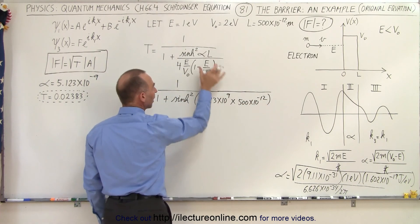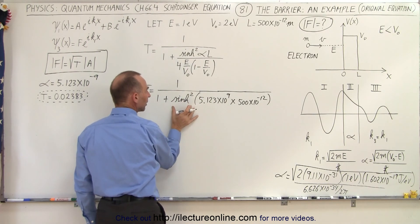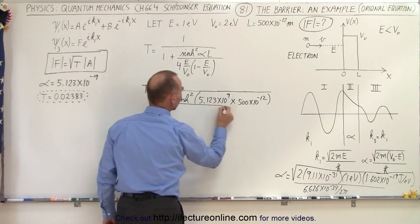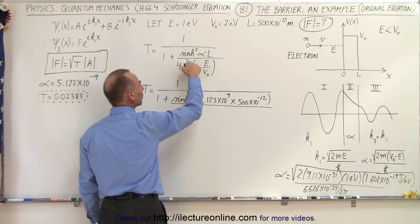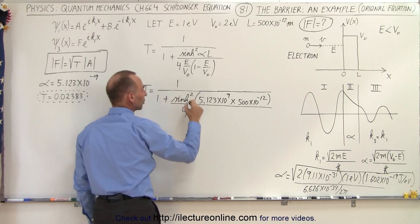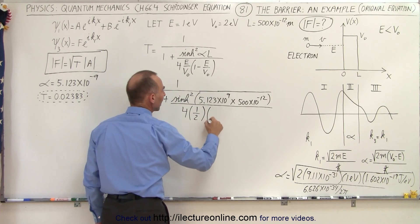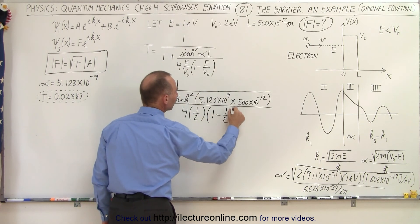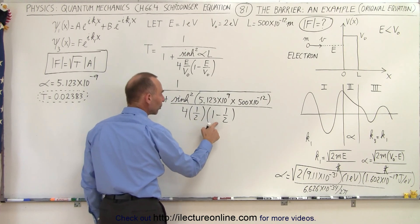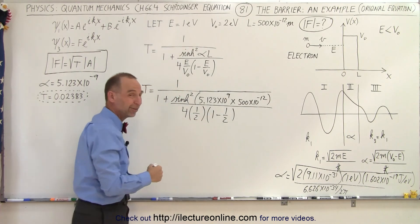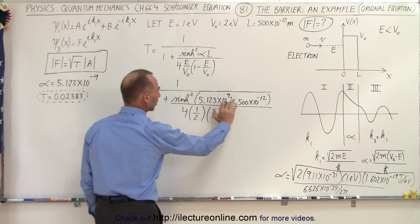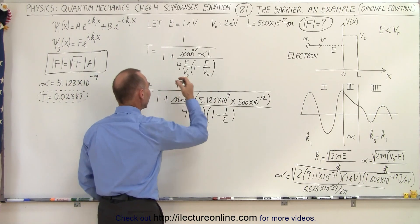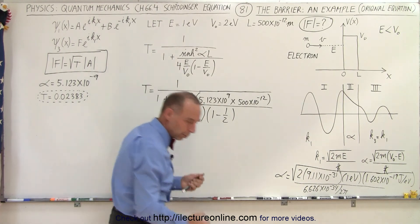We take the hyperbolic sine of that, we square that, and we're going to divide that by four times the ratio of the energy of the particle divided by the potential of the barrier which is one half, and one minus one half. So basically one half times one half which is one fourth, times four which is equal to one, so the whole denominator here becomes one.